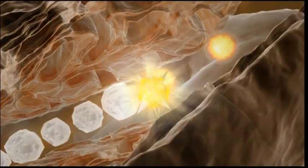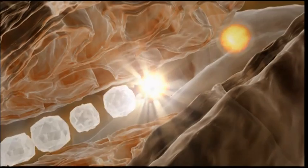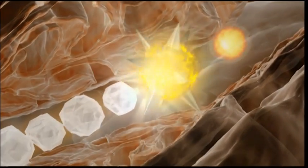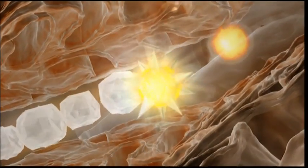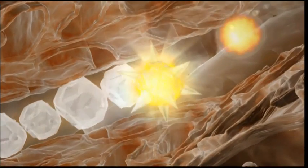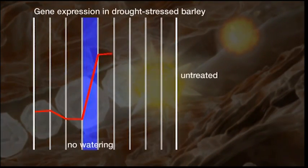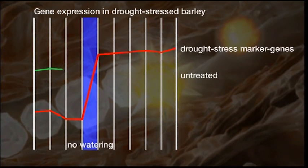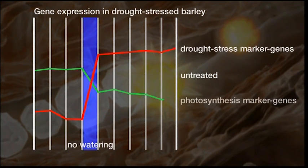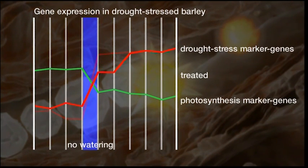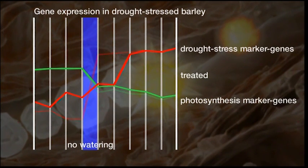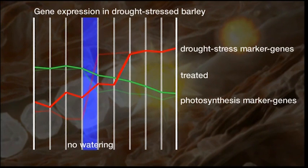That means less energy is consumed in the plant to react to stress — more energy is available for growth. The impact of stress is measurably mitigated in Gaucho-treated plants. Our trial on drought-stressed barley shows the effect: treated plants show a delayed increase of drought-stress marker genes, and at the same time, photosynthesis remains at a higher level.